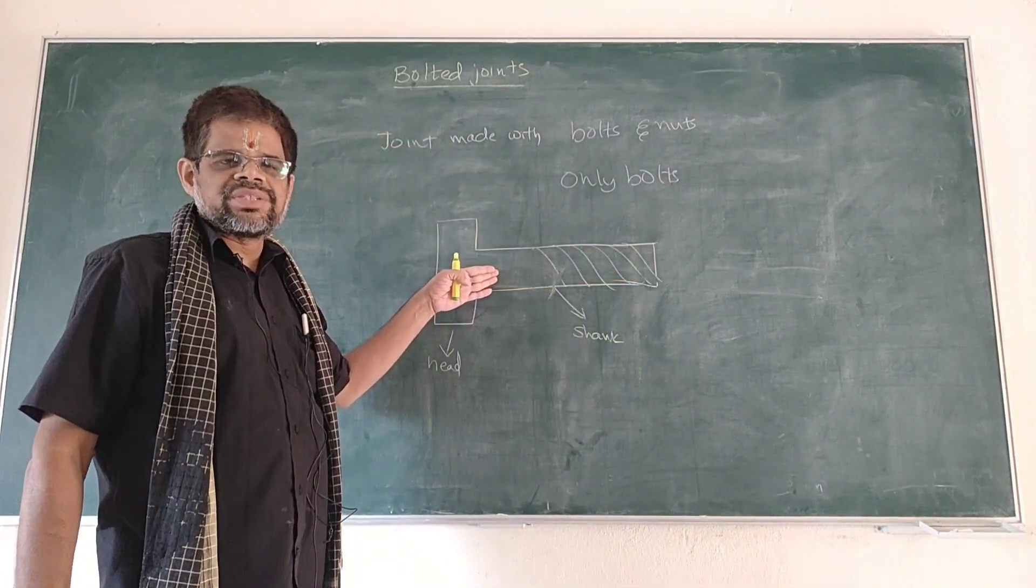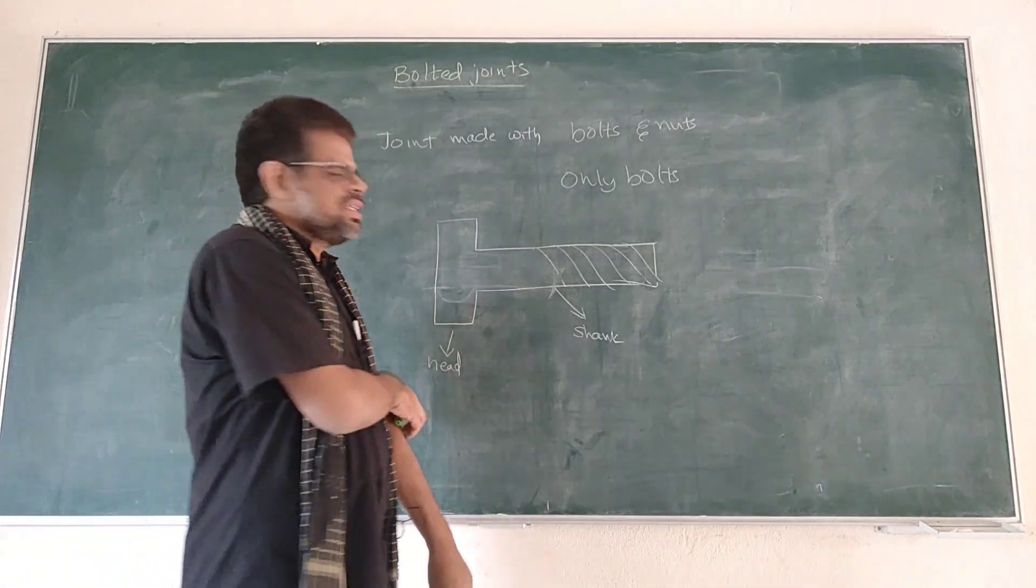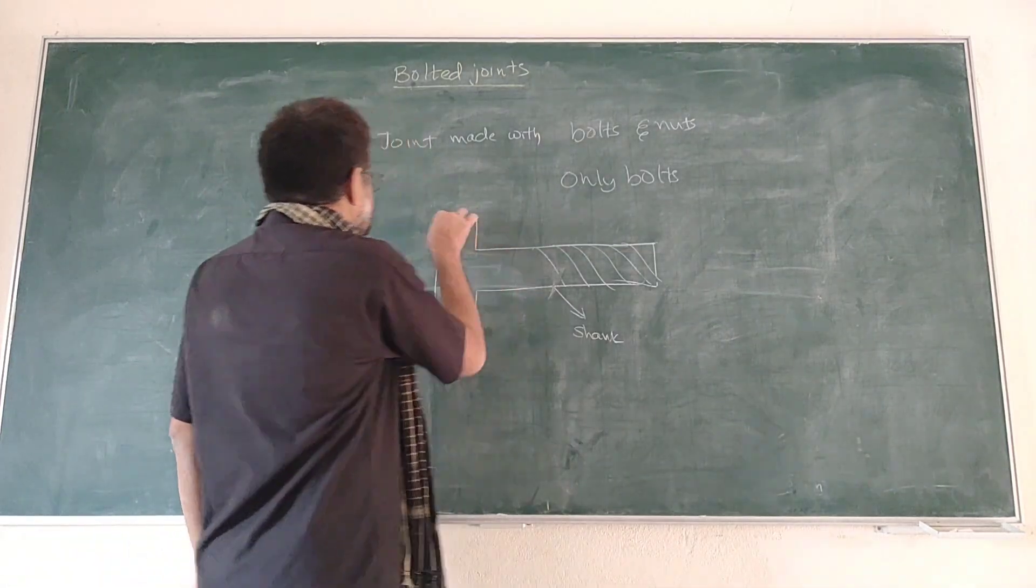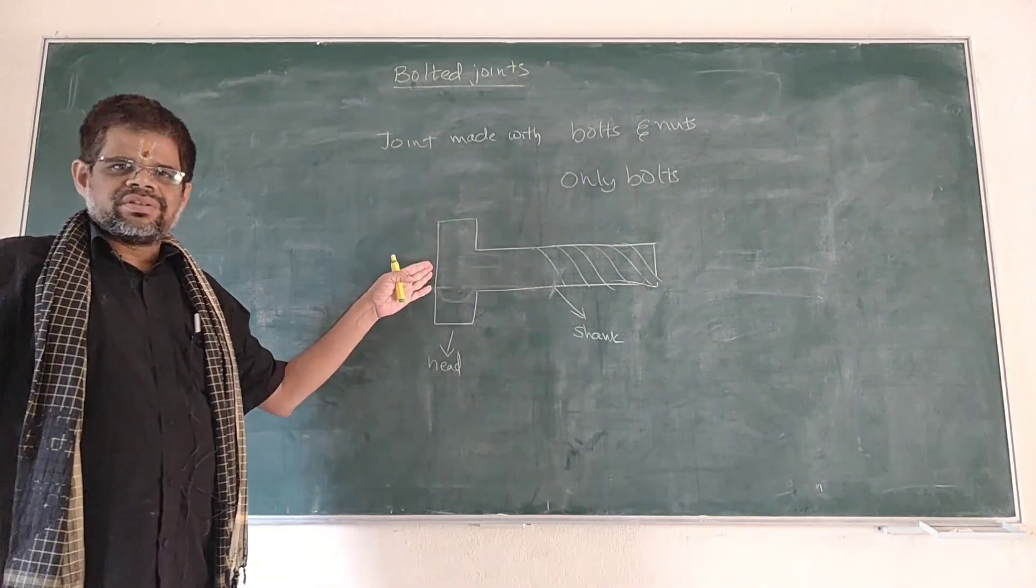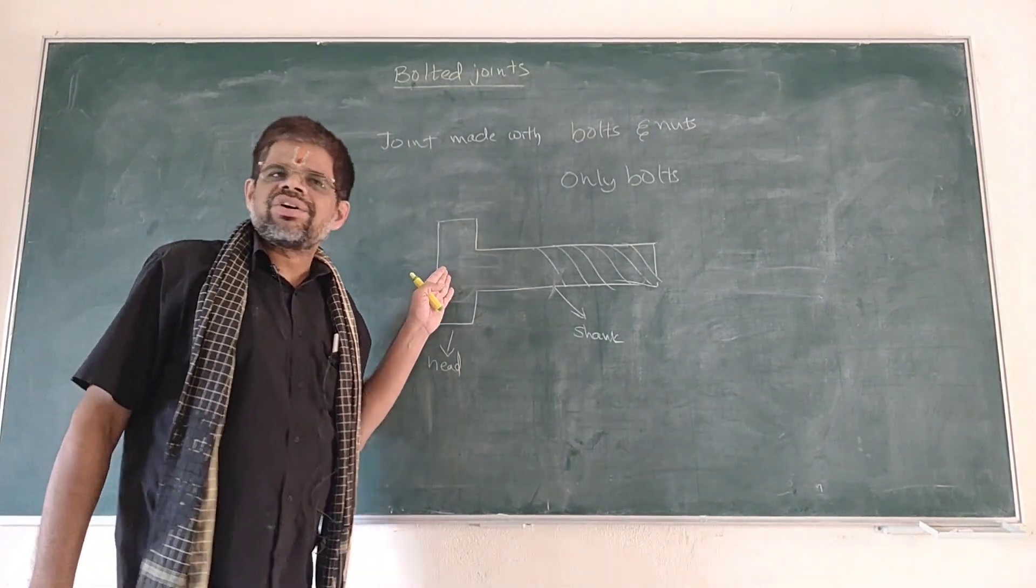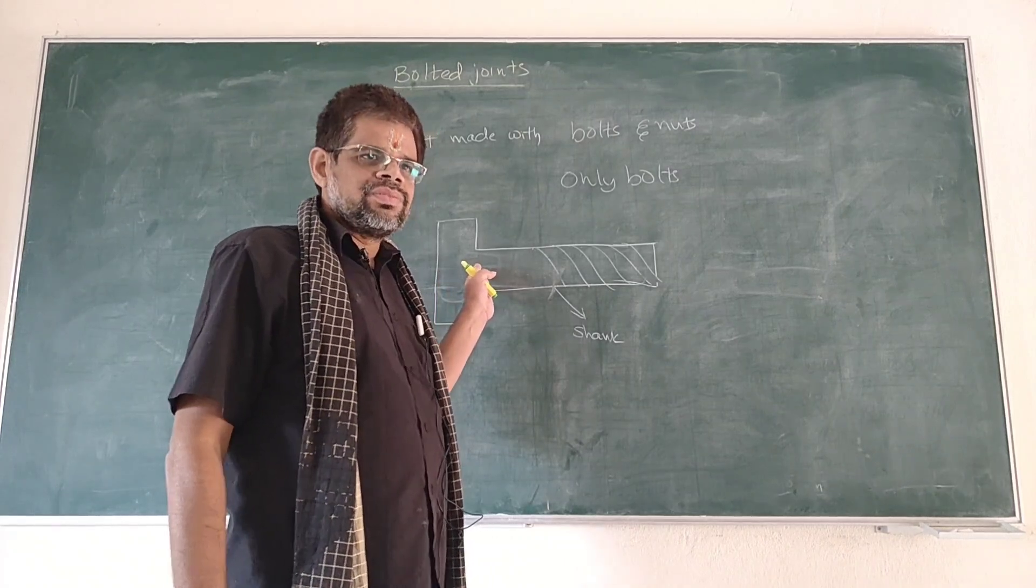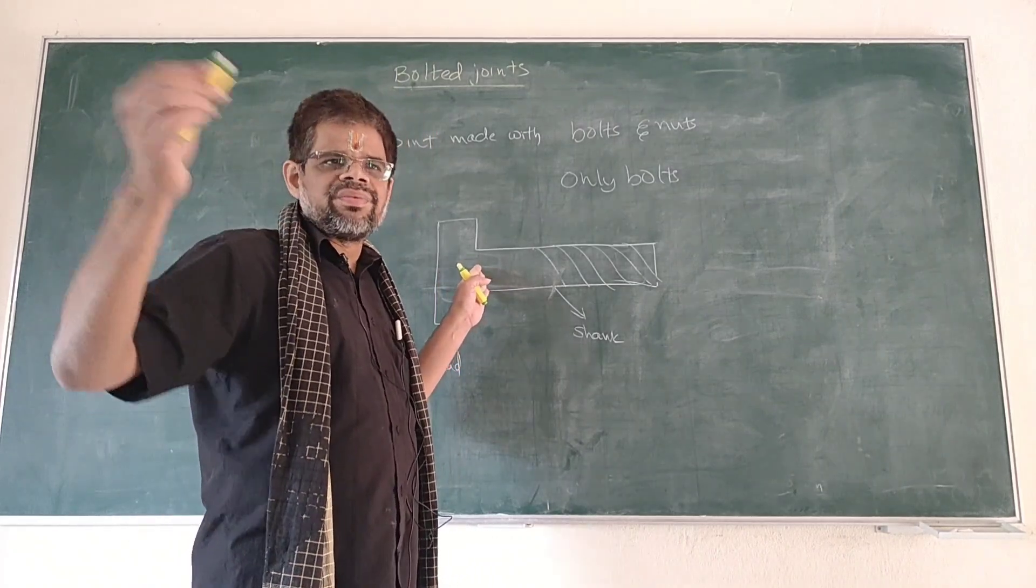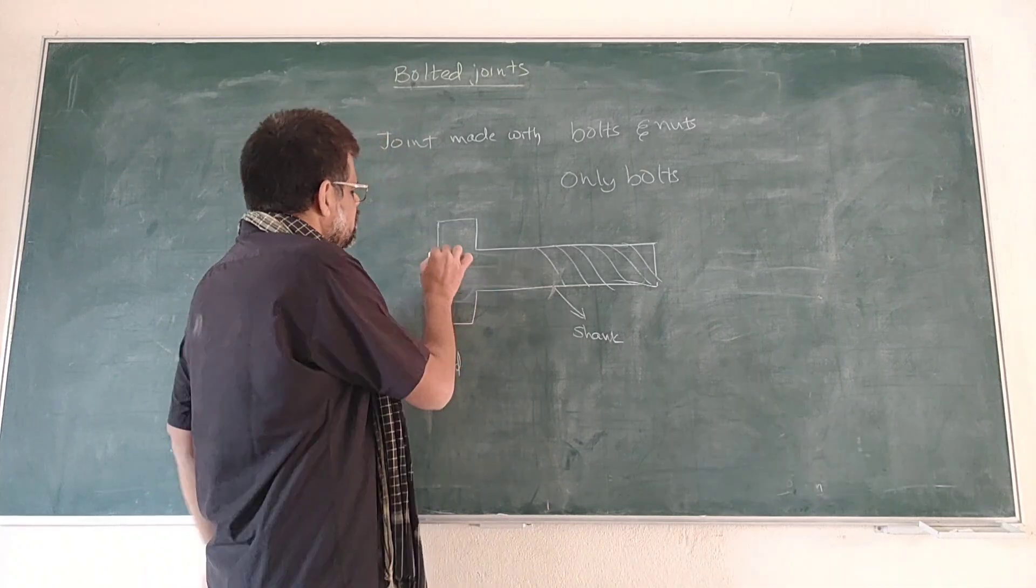The head can be made in different shapes. Mostly we use hexagonal heads, and sometimes square heads are also used. Different types of head forms are there that we have discussed in machine drawing. For example, this is a hexagonal headed bolt on which some threads are formed.